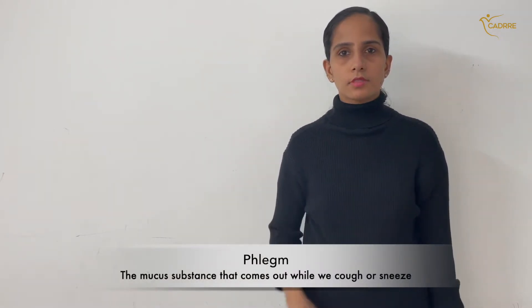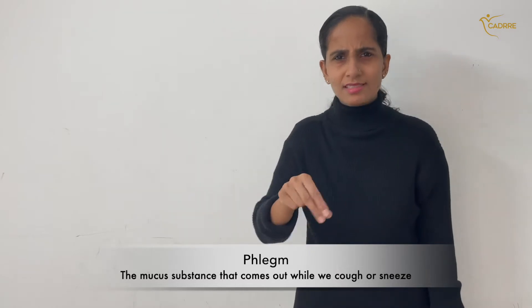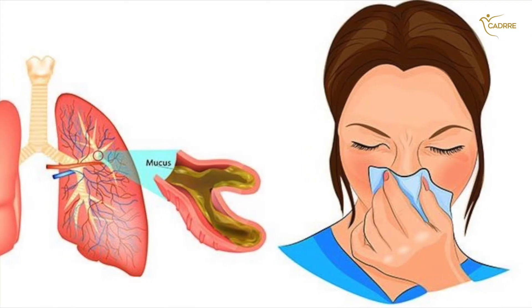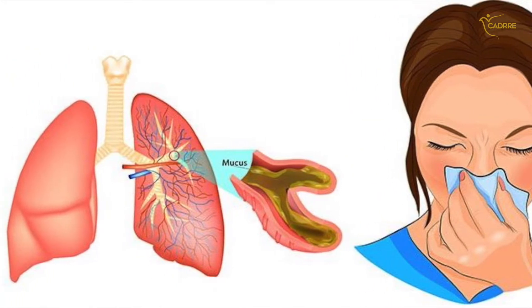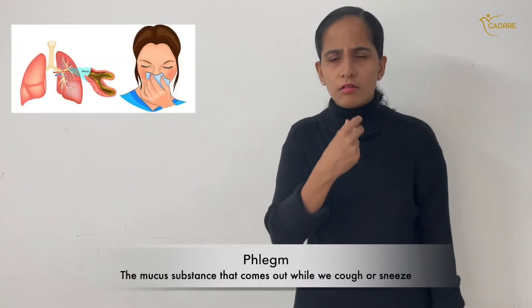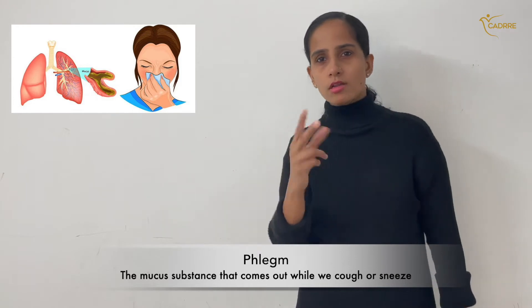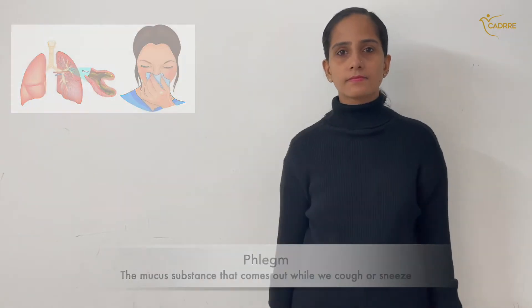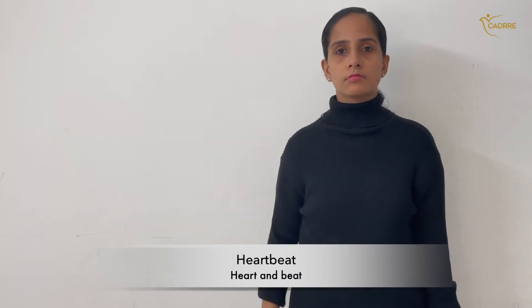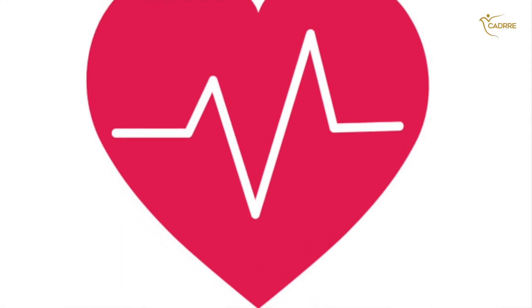Phlegm — the mucus substance that comes out when we cough or sneeze. Phlegm. Heartbeat — heart and beat. Heartbeat.